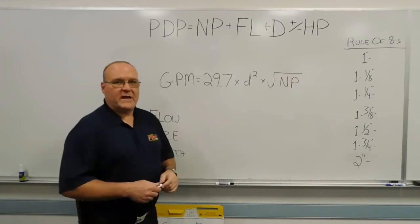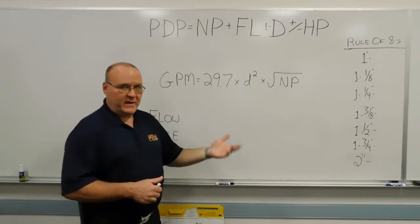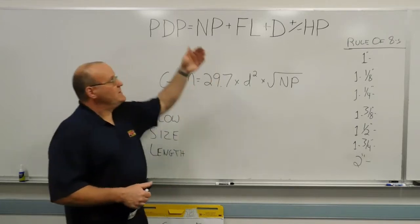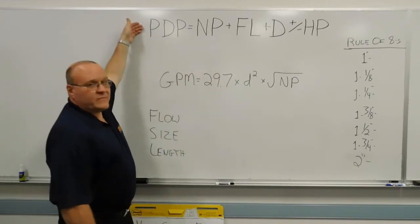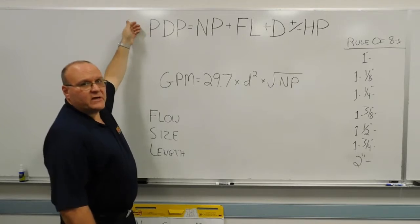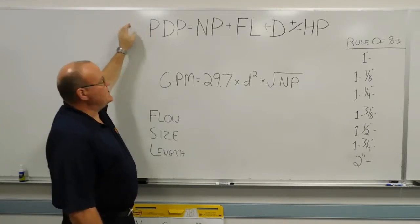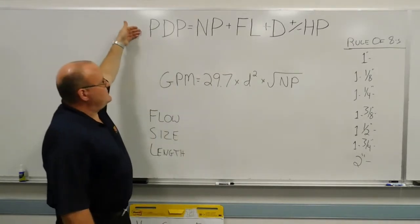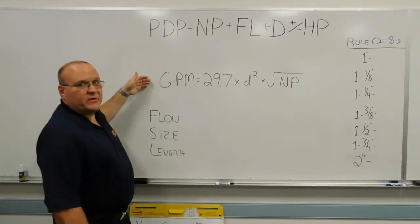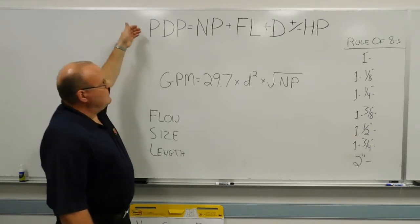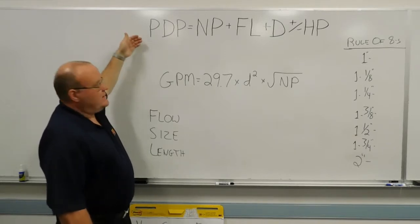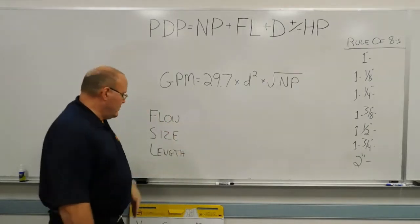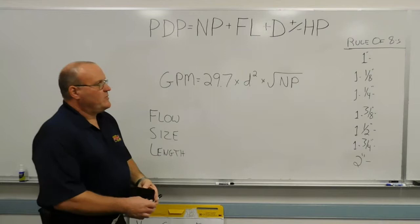Nowhere is this more important having that gallon per minute flow than on the attack engine. Because our goal as pump operators is this number is important. We want to be accurate. We want to calculate this number accurately and come up with the correct pump discharge pressure and account for all of the elements to do that. But we have to understand that this is just a tool to get us to the gallon per minute flow. We want to be accurate here but understand that the important part of that equation is the gallon per minute we're pushing at the end. So pumps charts, certainly a good method to come up with that.